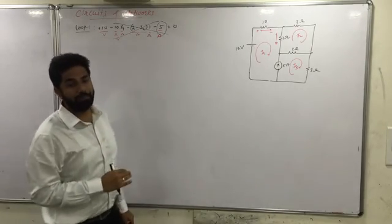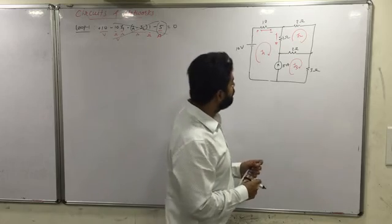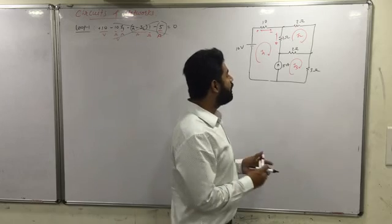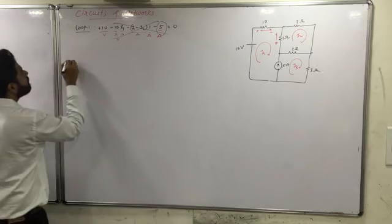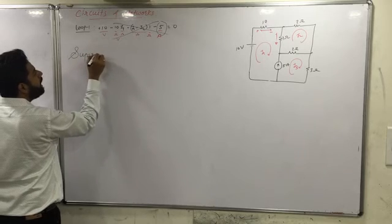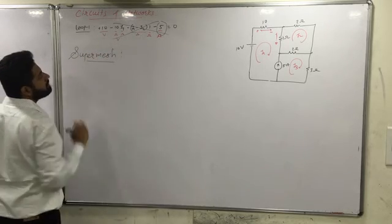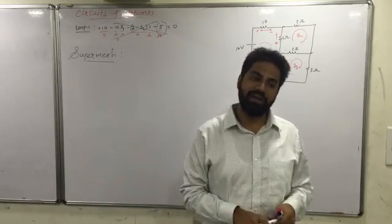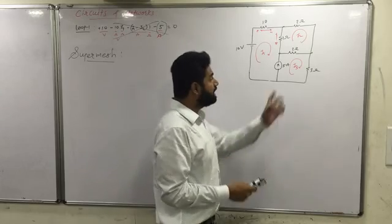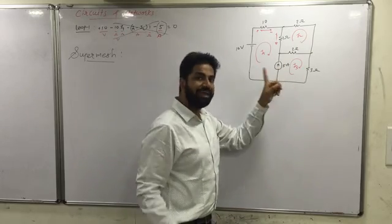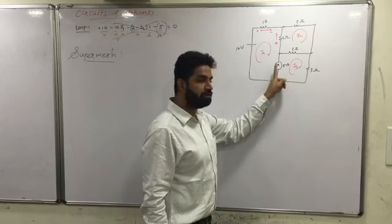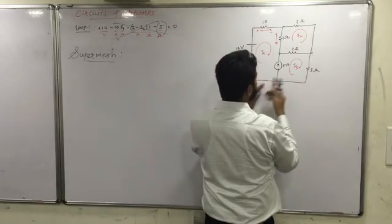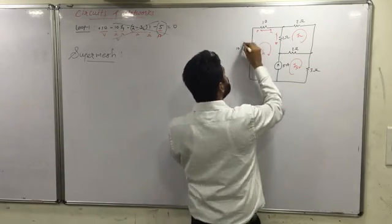So why was it not happening properly? There is a new concept here — it is called the concept of supermesh. If in between two loops we have a current source, that entire portion is considered as a supermesh.